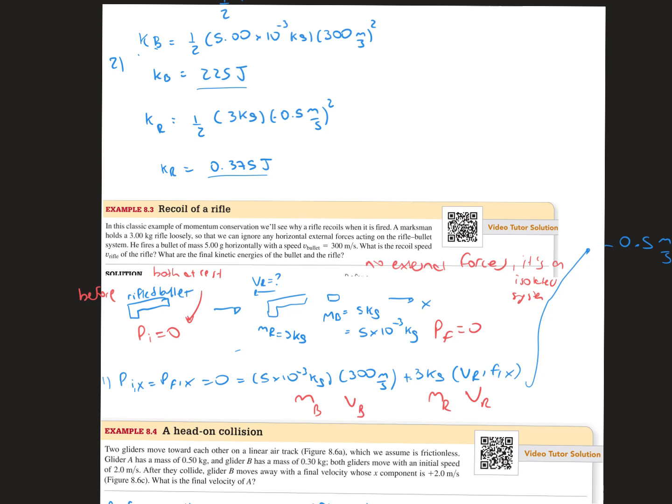In this question, we have a classic example of momentum conservation where a rifle recoils when it is fired. A marksman holds a 3 kg rifle loosely so that we can ignore any horizontal external forces acting on the rifle-bullet system. He fires a bullet of mass 5 grams horizontally with a speed of 300 meters per second. What is the recoil speed of the rifle and what are the final kinetic energies of the bullet and the rifle?